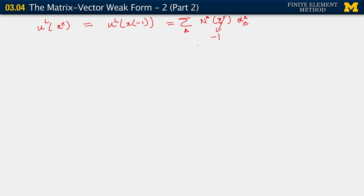We recall that these basis functions we've constructed have the Kronecker delta property. So this is essentially the Kronecker delta delta_{a1}, and therefore applied to d_a^e, this becomes equal to simply d_1^e.